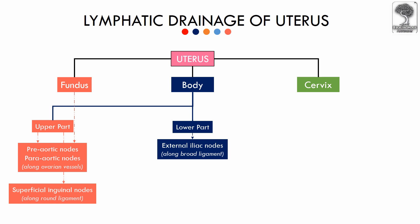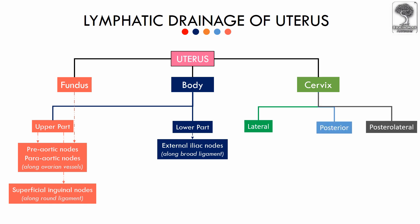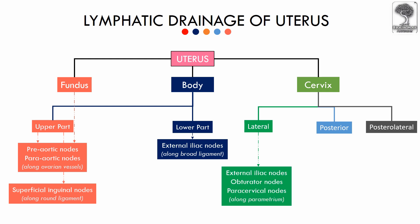For describing the lymphatic drainage of the cervix, it is divided into lateral, posterior, and posterolateral parts. From the lateral aspect of the cervix, the lymphatic channels drain along the course of the parametrium into the external iliac lymph nodes, obturator lymph nodes, and paracervical lymph nodes.